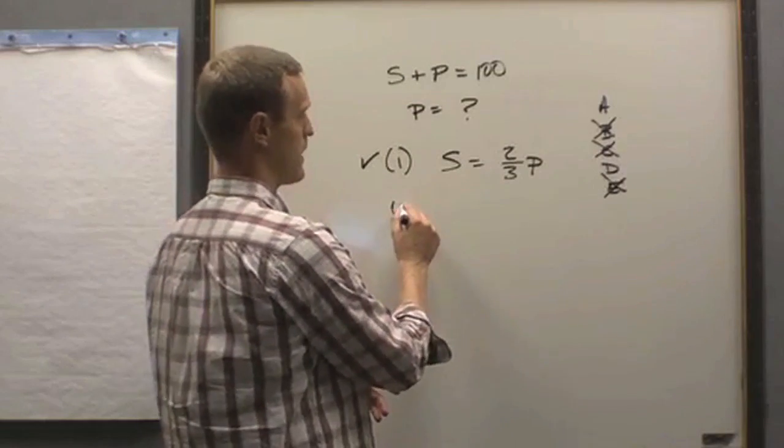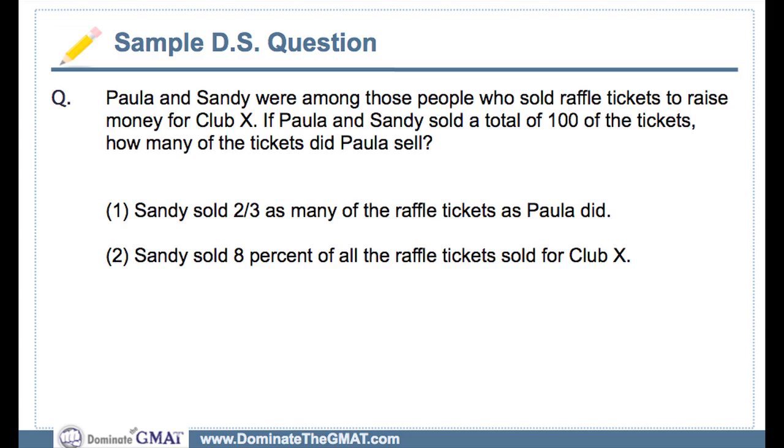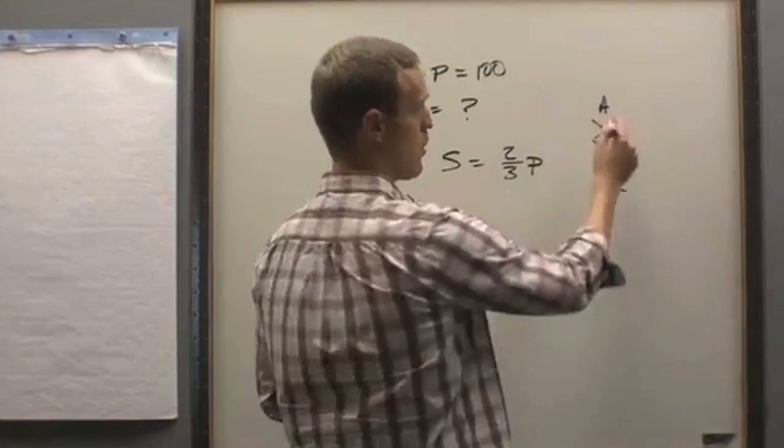And then we would simply have to evaluate statement number two, which you will see is impossible to solve because we don't even know the total number of tickets that were sold. The answer, of course, is A.